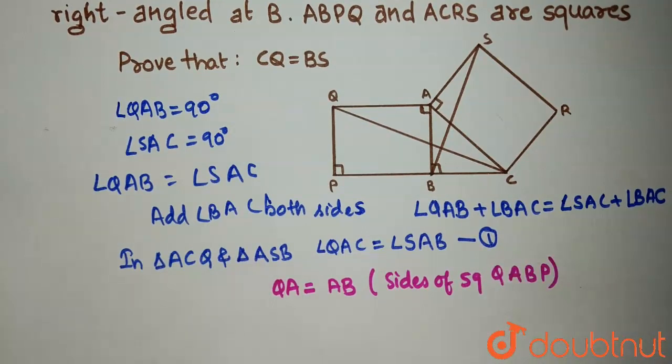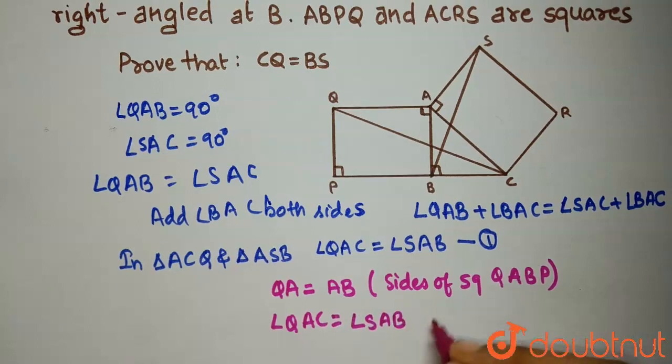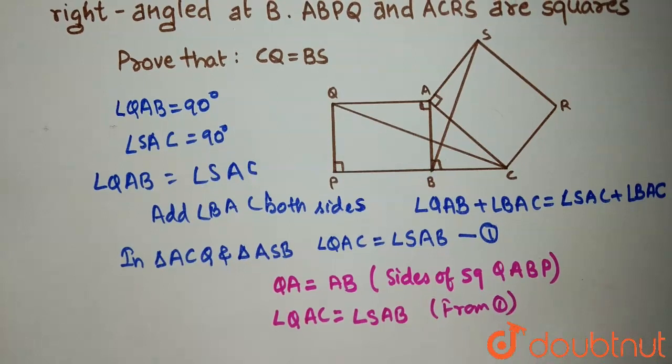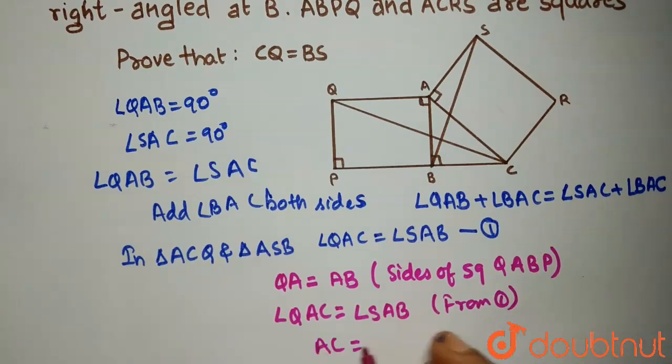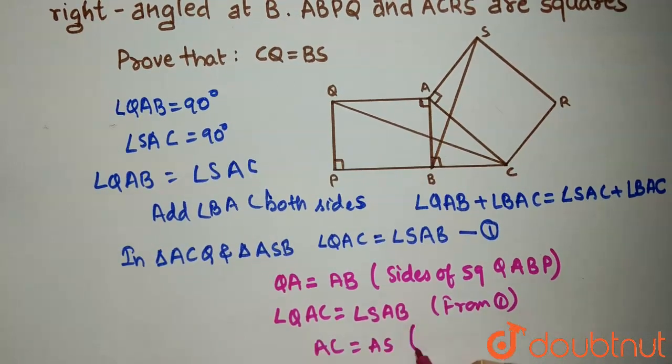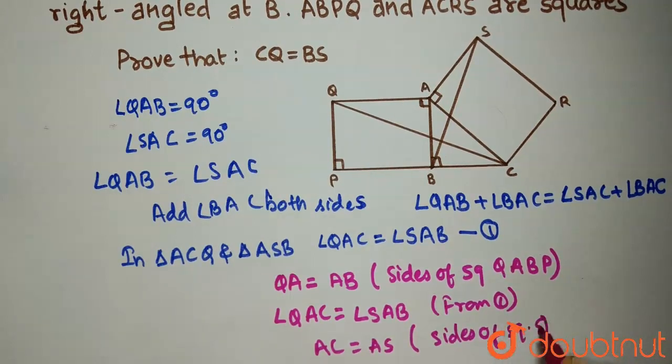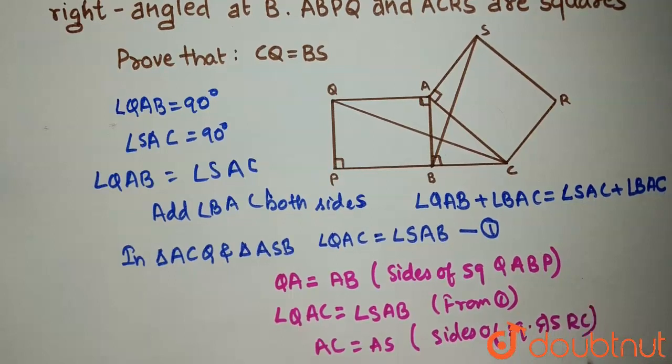Also, angle QAC equals angle SAB from equation 1. And along with that, AC equals AS because these are sides of square ASRC.